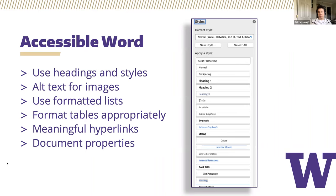Now that we've established an understanding of the principles and requirements for accessible documents, let's look a little bit deeper at the software application and the tools within those applications that can guide a content creator to making a more accessible document. It's important to note that Microsoft Word is a word processing program, not a layout program. With that said, it is possible to create an accessible Word document with a nice layout when using the appropriate formatting tools.